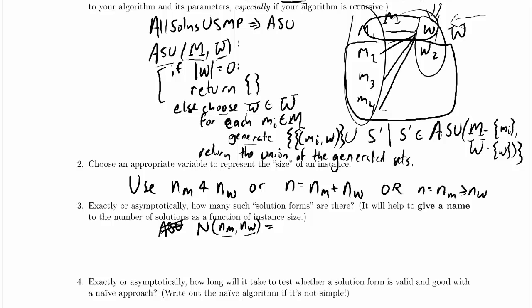You know what, we returned the empty set up here, and that was meant to be a solution. But we're supposed to return a set of solutions from ASU, so this is actually wrong. This is the set containing the empty set. It's a set of solutions, and there is one solution inside of it. That one solution is the empty set, an empty solution.